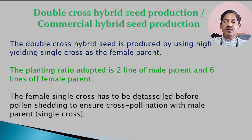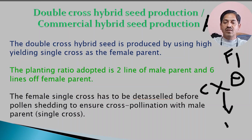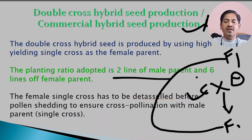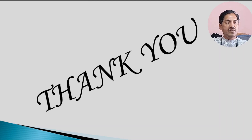Double cross hybrid production involves two steps. In the first year, two separate single crosses are made: A × B gives F1, and C × D gives another F1. In the second year, these two F1 single cross hybrids are crossed together to produce the double cross hybrid. This covers hybrid and open pollinated seed production in maize.